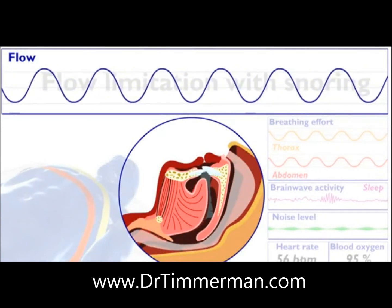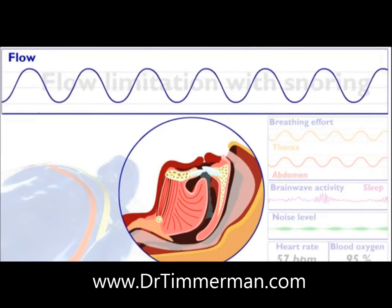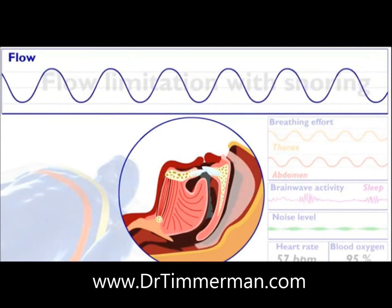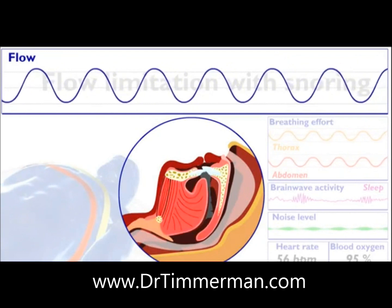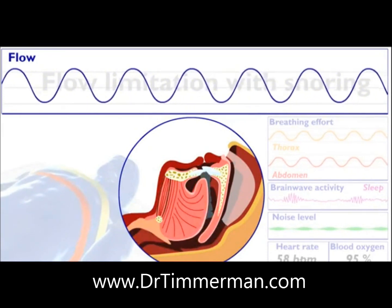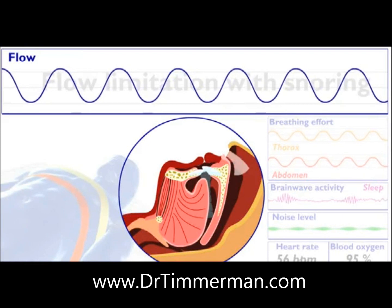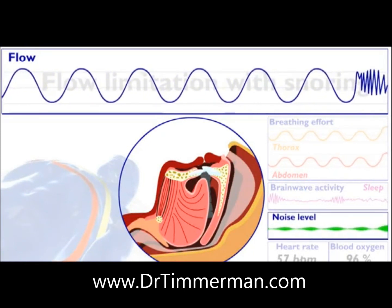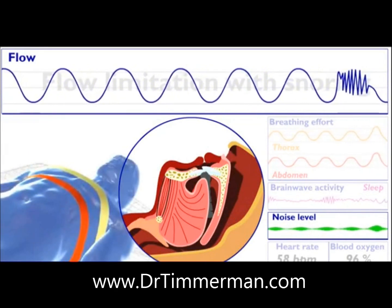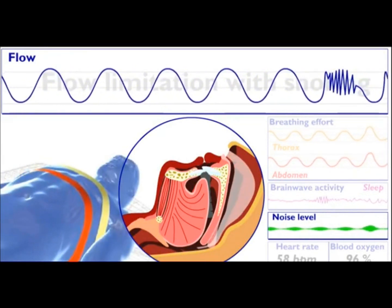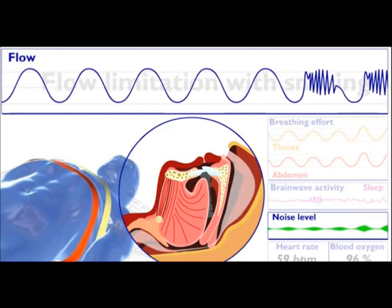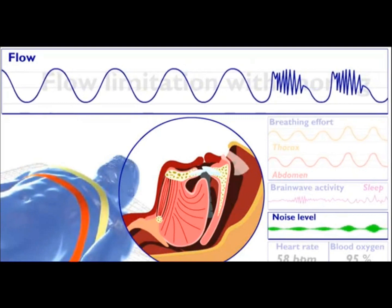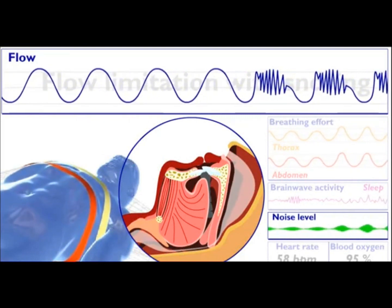Flow limitation with snoring — what is really happening? In many people with sleep-disordered breathing, snoring may occur along with flow limitation. As the muscles in the upper airway relax, the soft tissue begins to vibrate when you breathe, creating the audible sound of snoring. The tendency to snore increases when you sleep on your back, and is also affected by other factors such as taking certain medications like sedatives, consuming alcohol, or general tiredness.